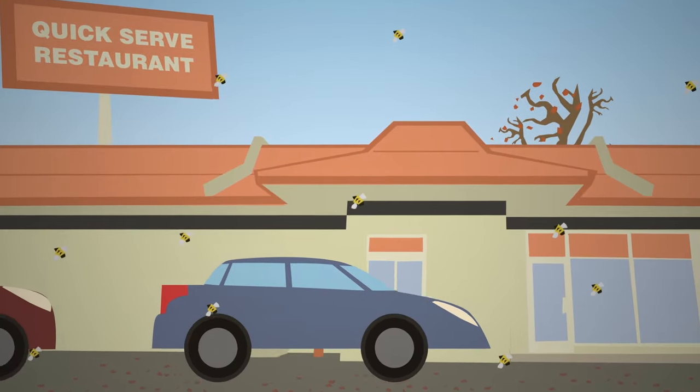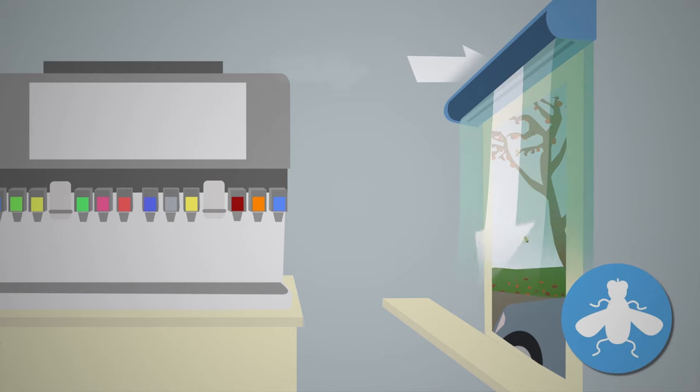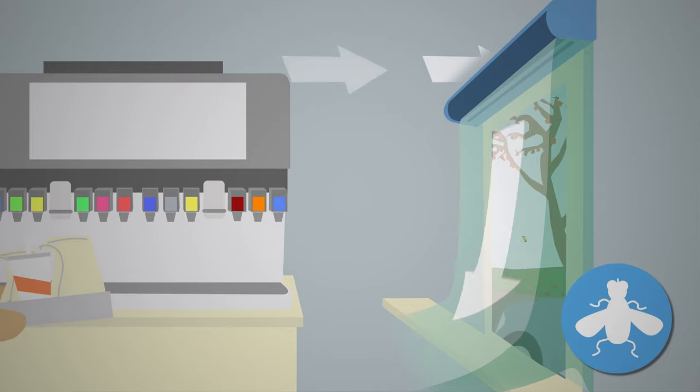In the autumn, as bees and yellow jackets get aggressive about preparing for winter, the drive-through air curtain helps to keep them away from employees working the window.